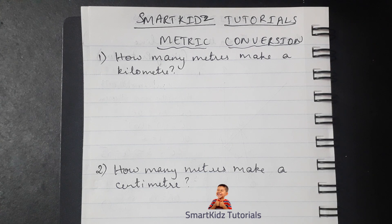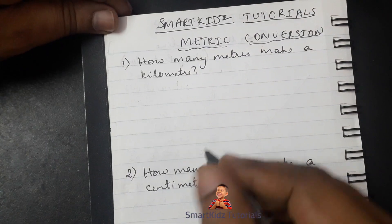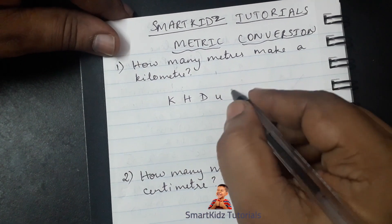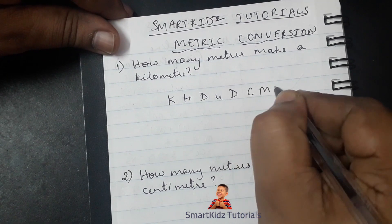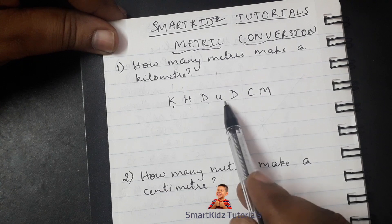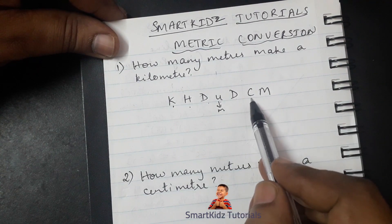We've got six questions and we can see two right now in front of us. Let's go straight to the first problem without any delay. The first question says: how many meters make a kilometer? To find that out, we'll make use of King Henry: King Henry Died Unexpectedly Drinking Chocolate Milk. K stands for kilo, H for hecto, D for deca, U is the unit — in this case it will be meters — then we have deci, centi, and milli.